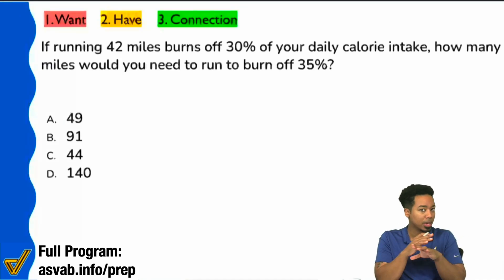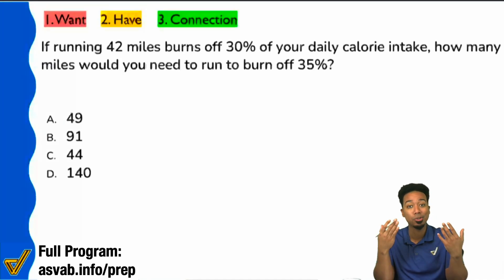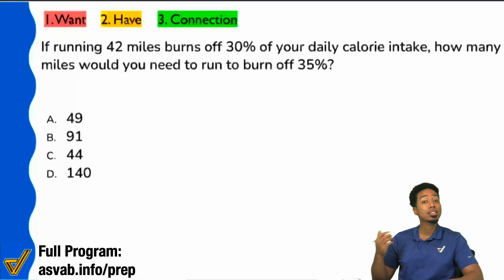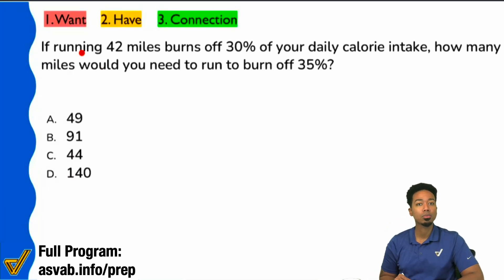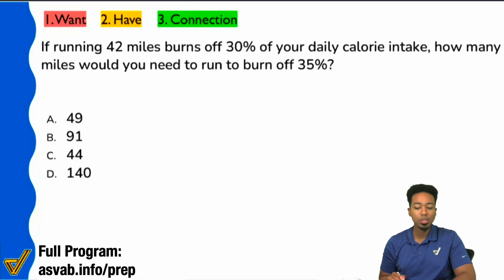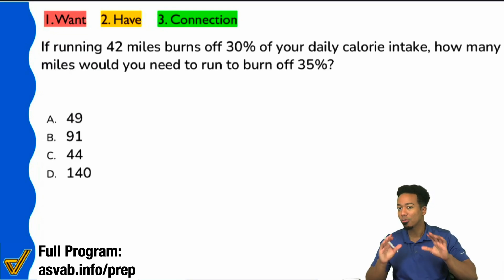Anybody from any skill level can identify what the question is asking you to find. So always start there. At the top left of the screen you're going to see: what do you want, what do you have, and what's the connection. That's really going to be a three-step process you should tackle any word problem with.